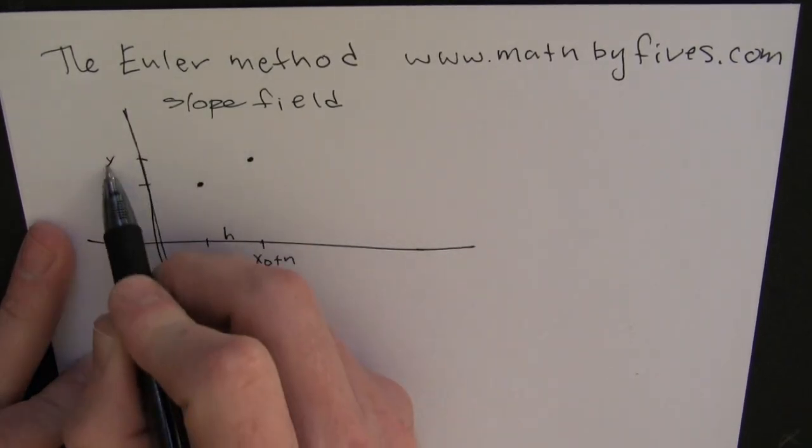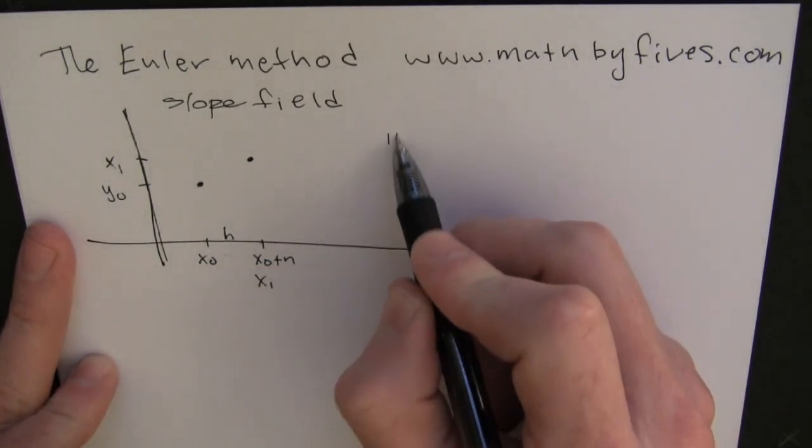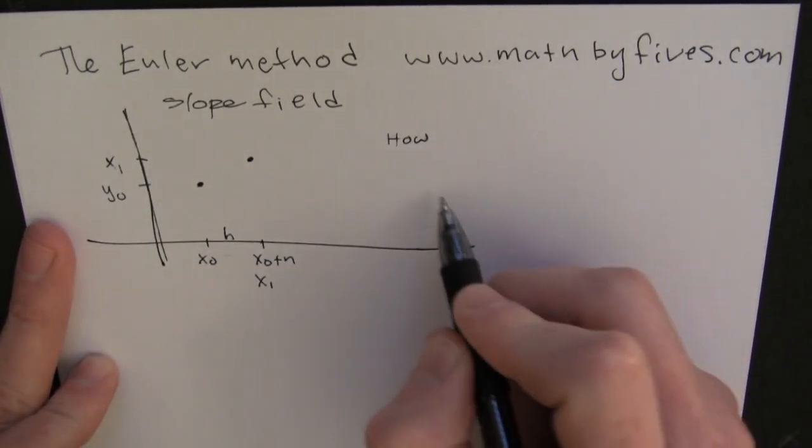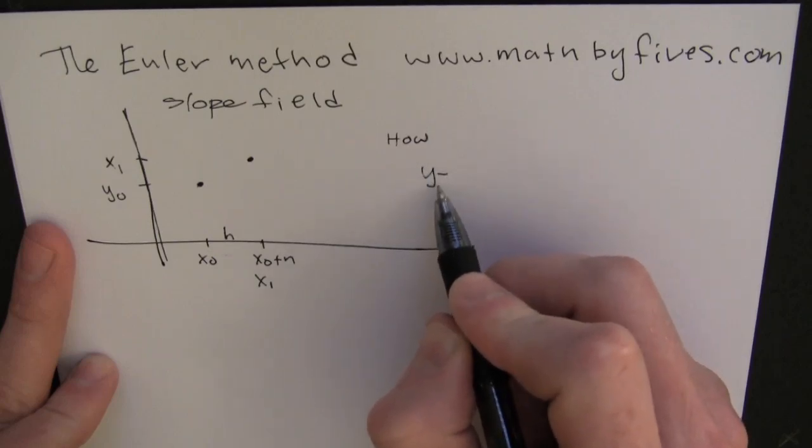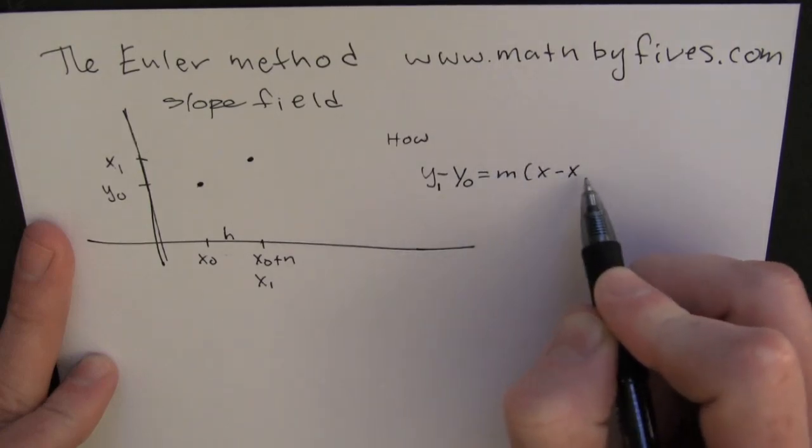That's y1, by the way, not x1. How are we going to do this? We're going to find our new height value by using our old familiar point-slope formula. That's from algebra. Algebra 1.